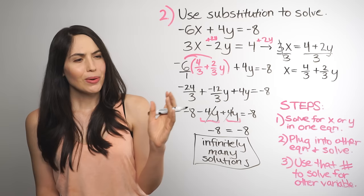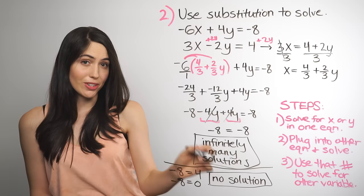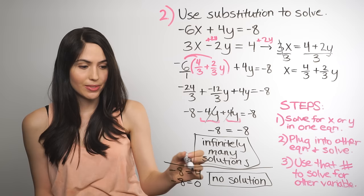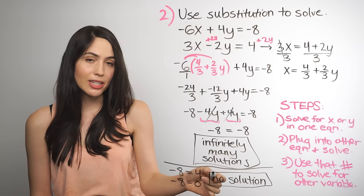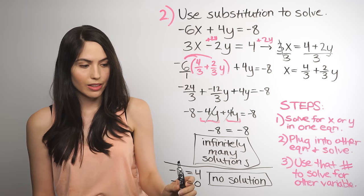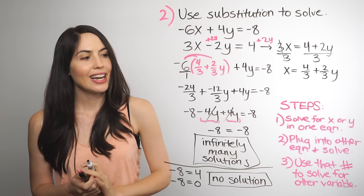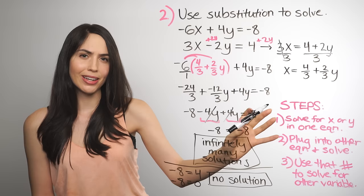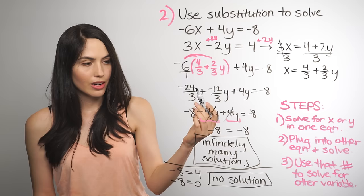There's another special case you'll probably see. If you get a number equals a totally different number — like negative 8 equals 4, or negative 8 equals 0 — that's just not true. So your answer will be no solution. There's no x and y you could come up with that will ever make this true. Those are the two special cases. The three steps are always the right way to go for substitution — you might end up with one of these special answers, but those steps will always work if there is a solution with actual numbers.